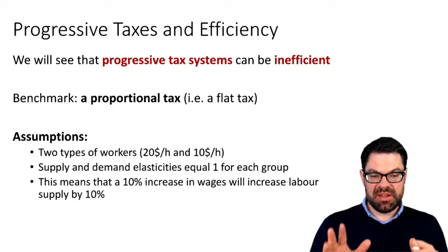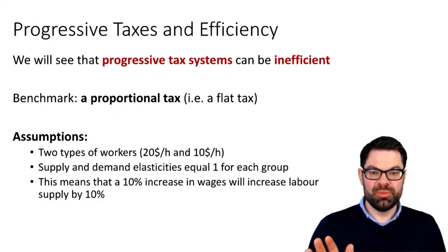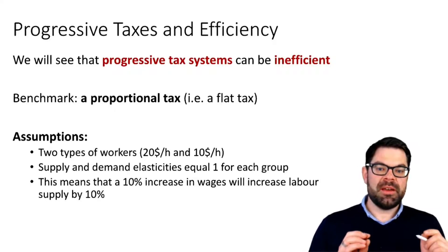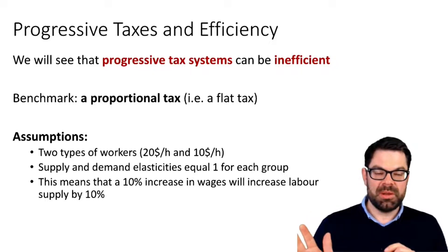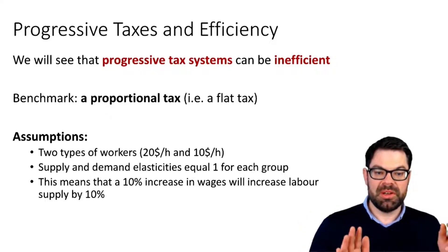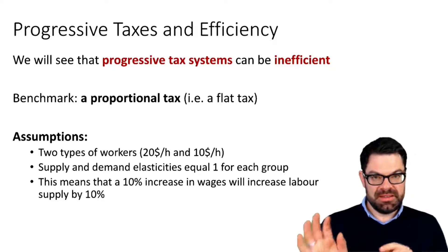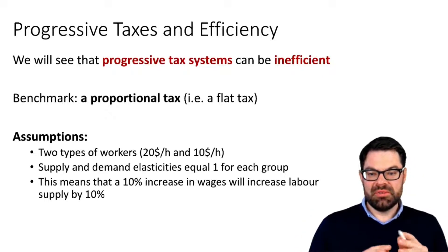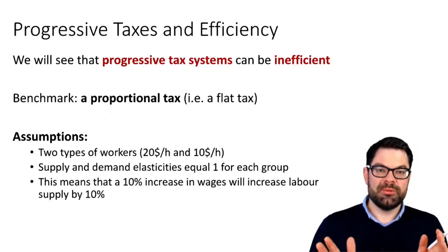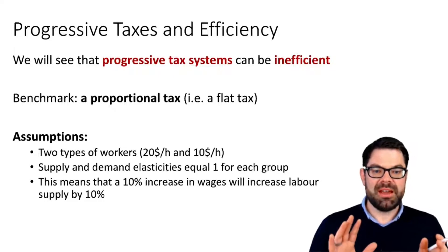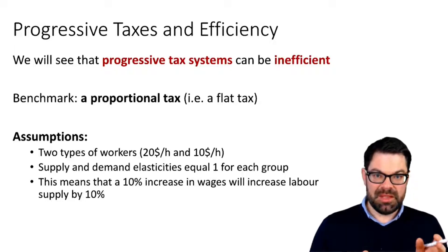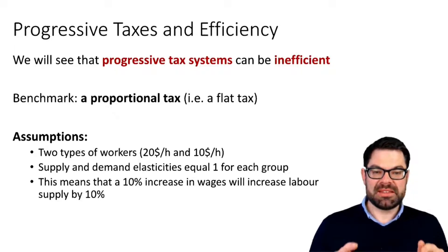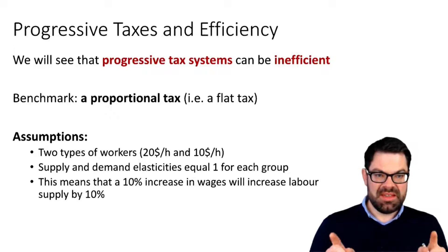We start with a simple example from Gruber's book, whereby we have two types of workers: a high-wage worker earning $20 an hour and a low-wage worker earning $10 an hour. In this simple example, we assume that the supply and demand curves for both types of workers have the same slopes. That will be important because if that's the case, we will see that progressive income taxes are inefficient.